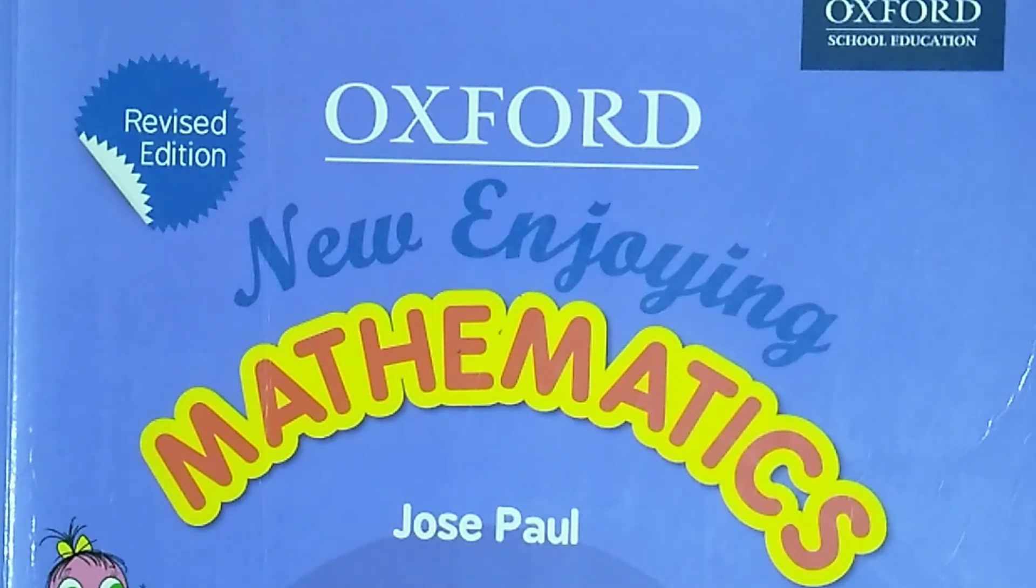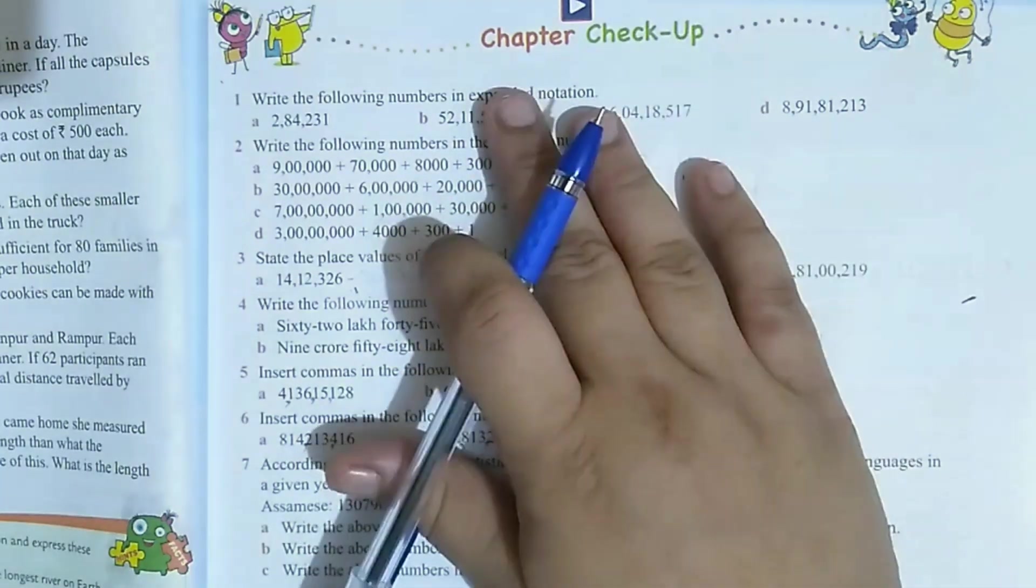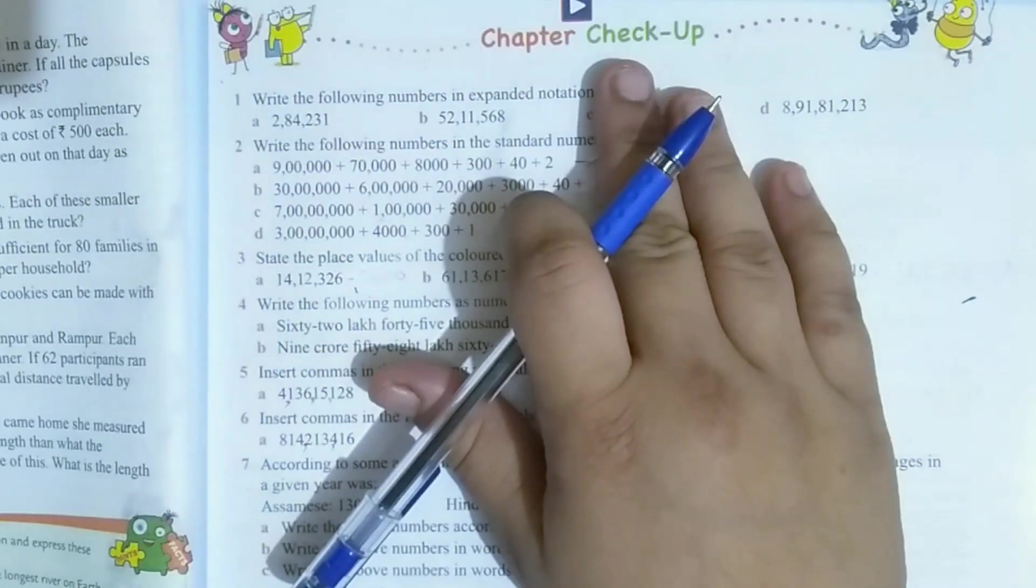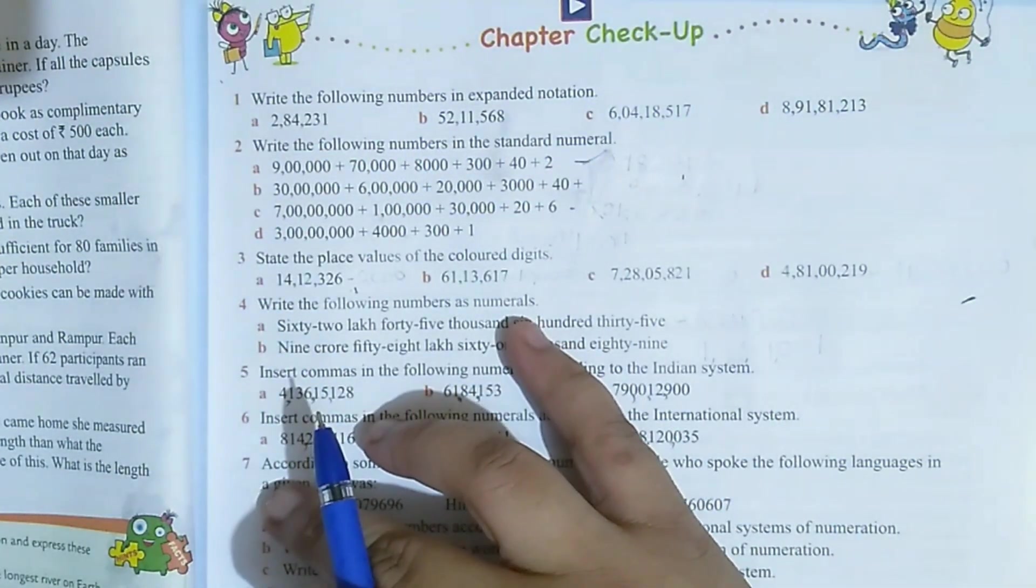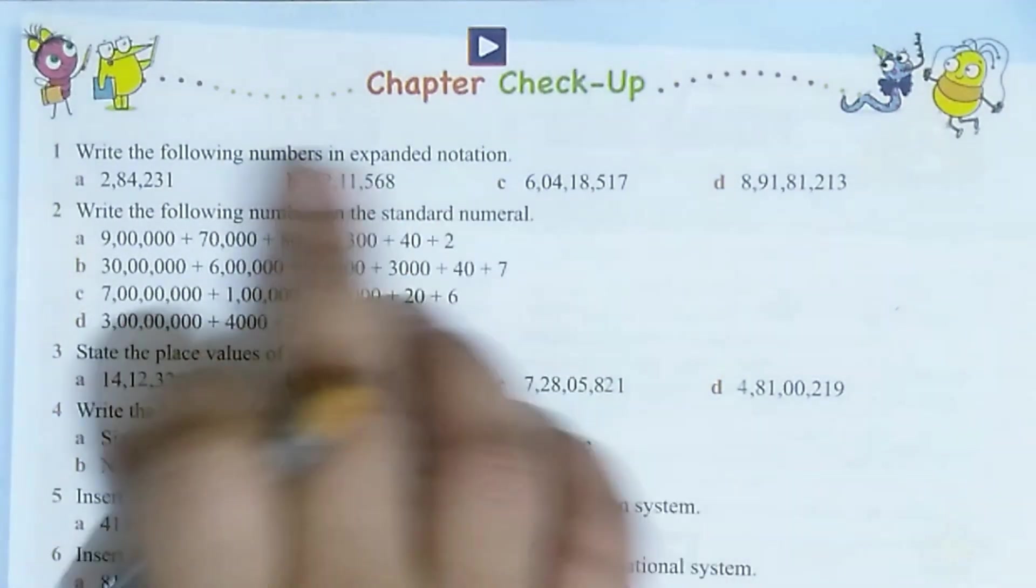Hello students, welcome to my YouTube channel SM2MatchPol and welcome to class 6. This is the series of Oxford New Enjoying Mathematics class 6, and in this video we are going to solve chapter check-up frame question number 1 to question number 7. First question: write the following numbers in expanded notation.